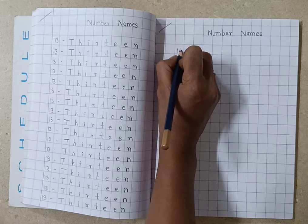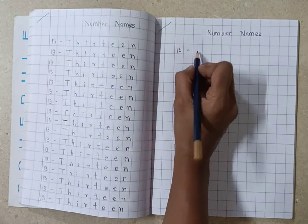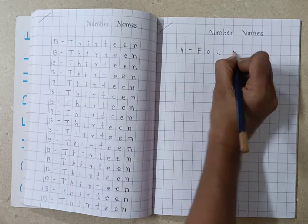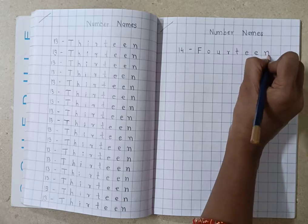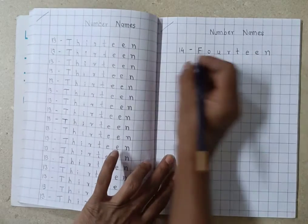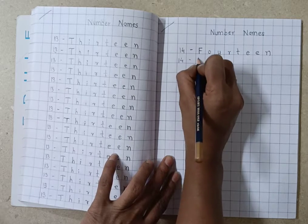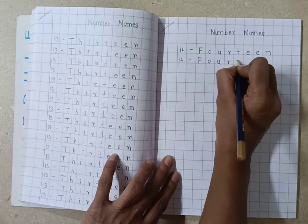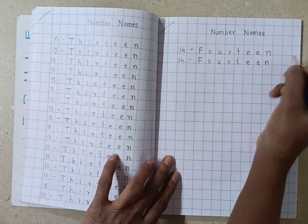Then you have to write number 14 here. What is the number name of 14? F-O-U-R-T-E-E-N-14. What is the number name of 14? F-O-U-R-T-E-E-N-14.